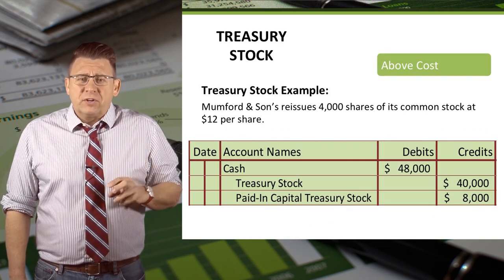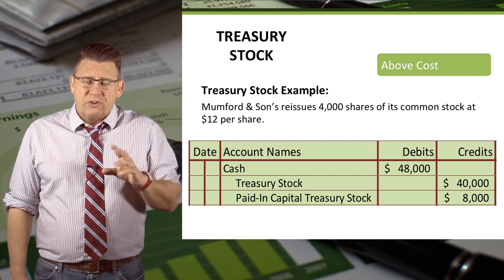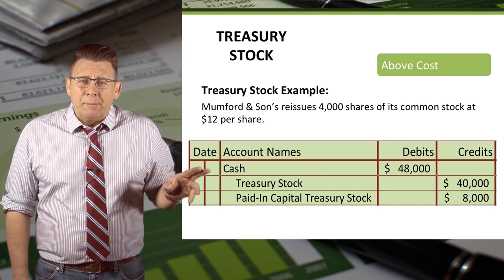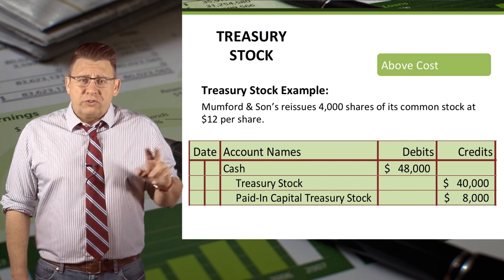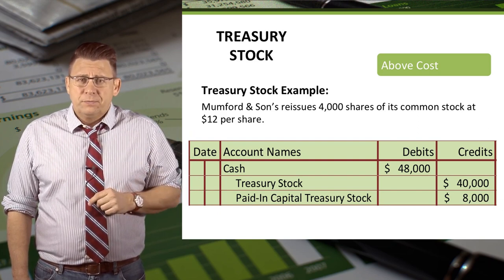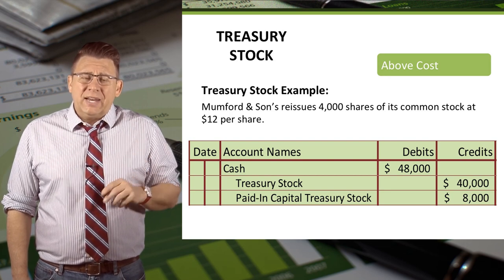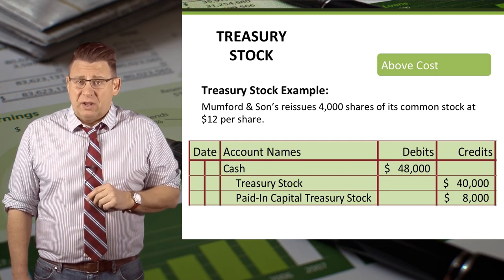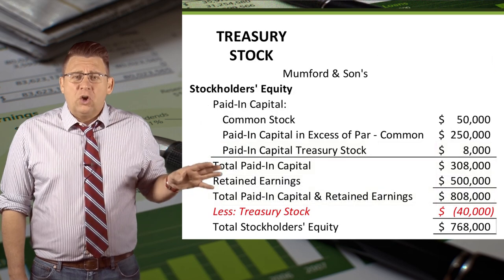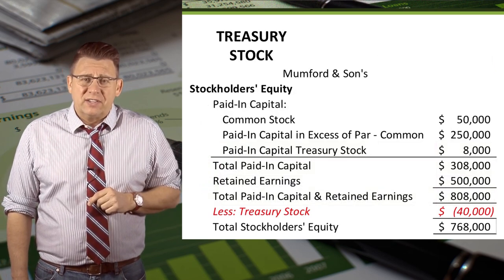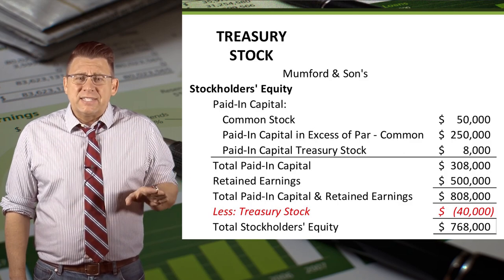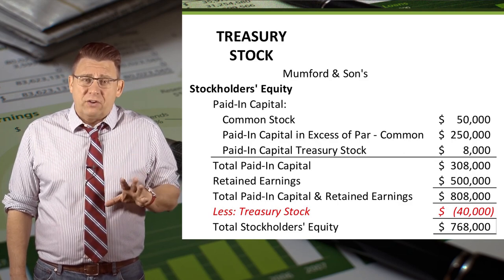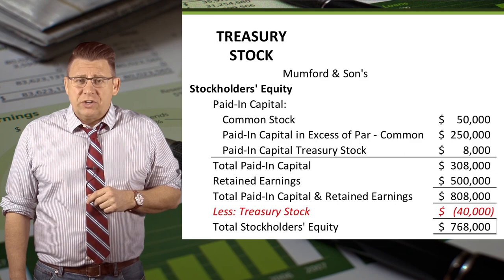In this example, Mumford & Sons reissues 4,000 shares of its Treasury stock at $12 per share, which is above cost. So we would debit cash for $48,000 and credit Treasury stock for $40,000, its cost. We would also credit paid-in capital for Treasury stock for $8,000 — the amount we reissued the stock above its cost. The stockholders' equity section after the reissuance shows paid-in capital for Treasury stock listed in the paid-in capital section, Treasury stock reduced by another $40,000, and equity increased by $48,000.